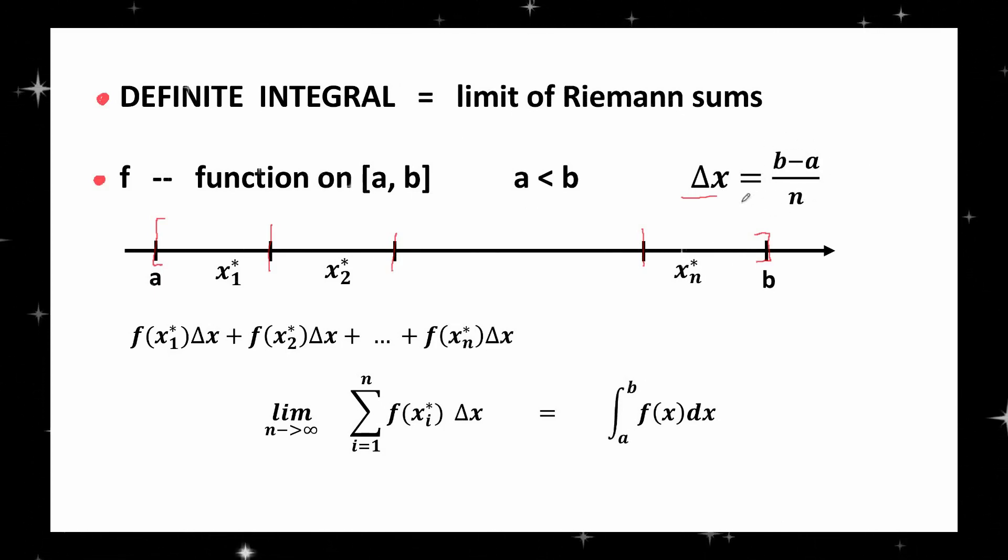Step 2: Choose sample points in those subintervals. Let x₁* be a sample point in the first subinterval, x₂* be a sample point in the second subinterval, and so on, let xₙ* be a sample point in the nth subinterval. The sample points may be left or right endpoints of the subintervals, or they may be chosen in a totally arbitrary way.